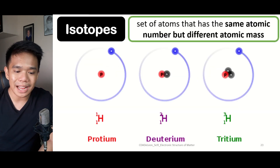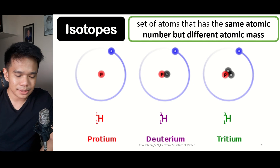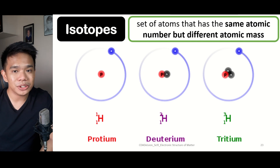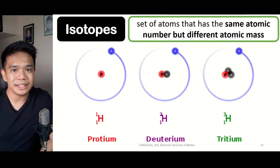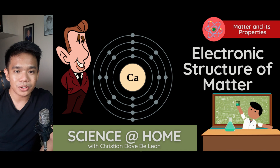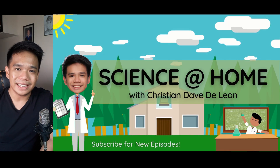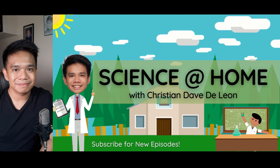Lastly, we have the idea of isotopes, which refers to a set of atoms that have the same atomic number but different atomic masses. Since they have the same atomic number, they have the same number of protons but varying numbers of neutrons. For example, the isotopes of hydrogen all have an atomic number of 1 — meaning one proton — but differ in their number of neutrons. We will continue our discussion of atomic structure in the next episode. This has been Sir Dave — keep safe and always have fun learning science at home!